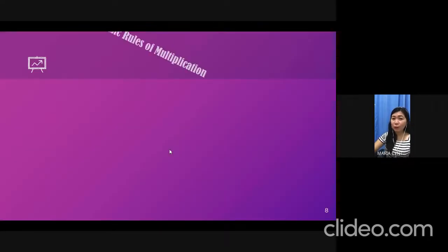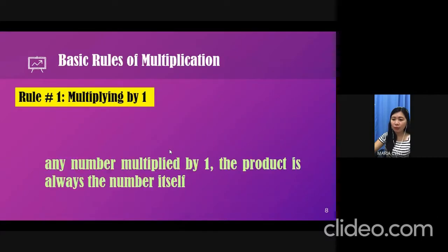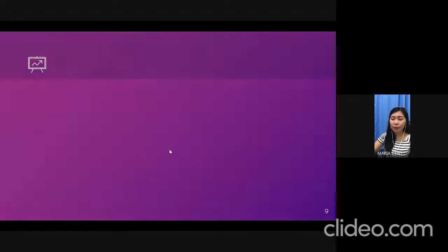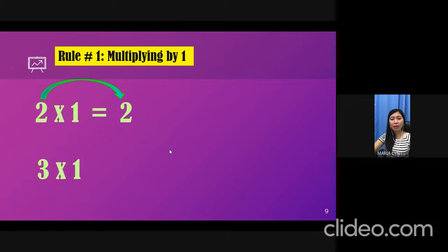This time, let's take a look at the basic rules of multiplication. Rule number 1: Multiplying by 1. It says any number multiplied by 1, the product is always the number itself. For example, 2 times 1, the answer is, that's right, it's 2. Next example, 3 times 1, of course, the answer is, very good, it's 3.